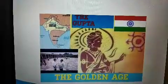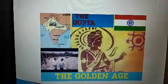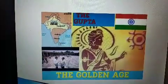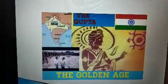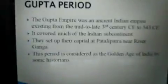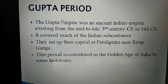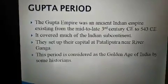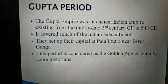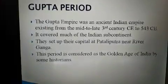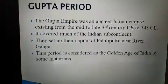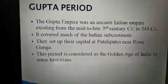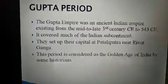After a brief introduction about Indus Valley Civilization, let us look at the next topic, the Gupta Dynasty. The Gupta Period, the Gupta Empire — it was a golden age for India. The Gupta period was an ancient Indian empire existing from the mid to late 3rd century CE to 543 CE. It covered much of the Indian subcontinent. They set up their capital at Pataliputra near the river Ganga. This period is considered the golden age of India by some historians, as many developments happened at that time.